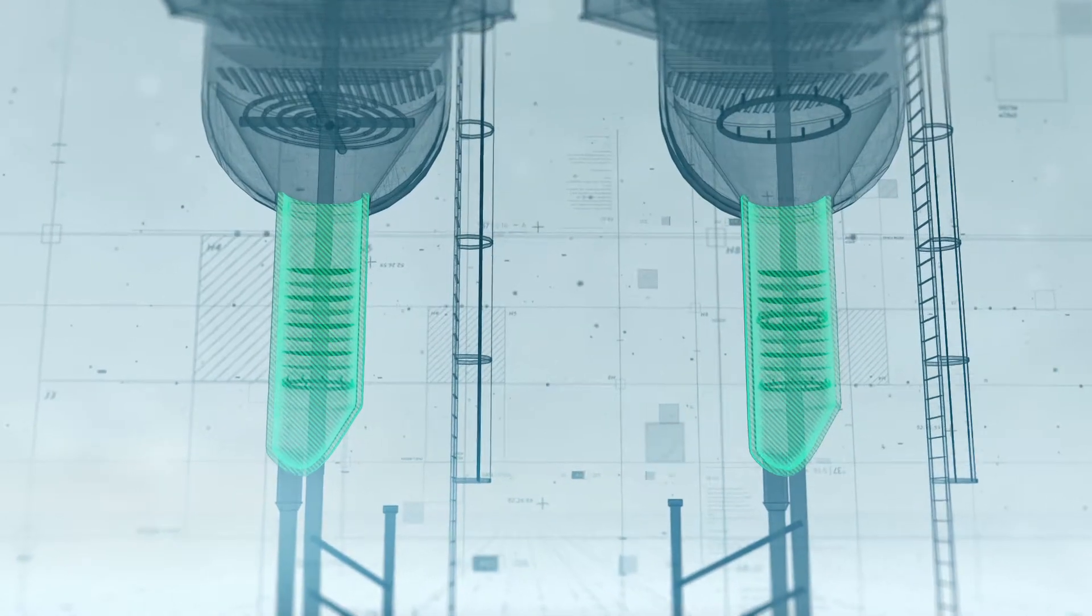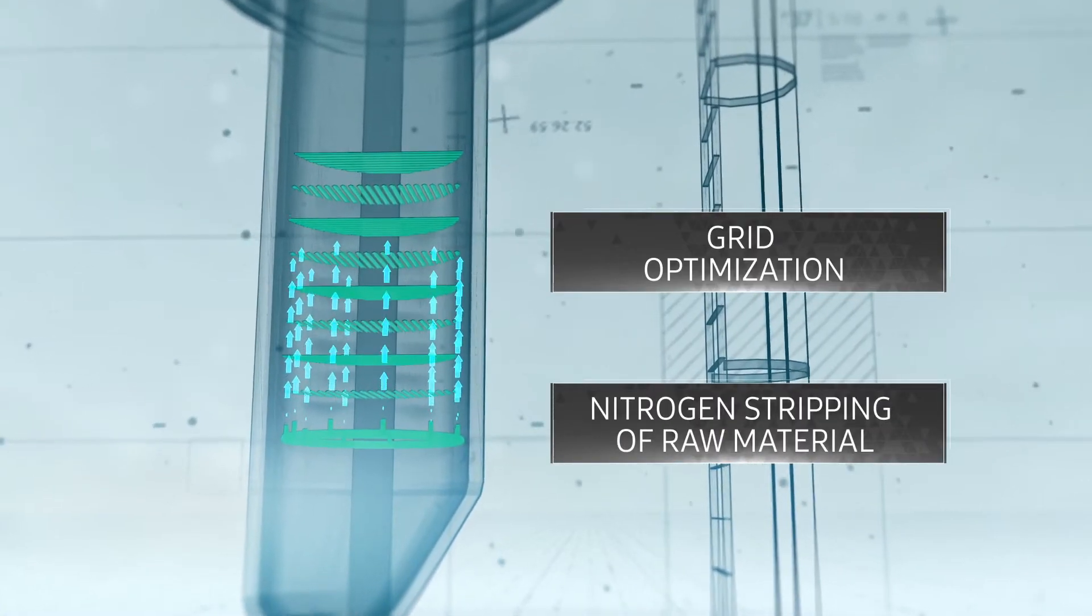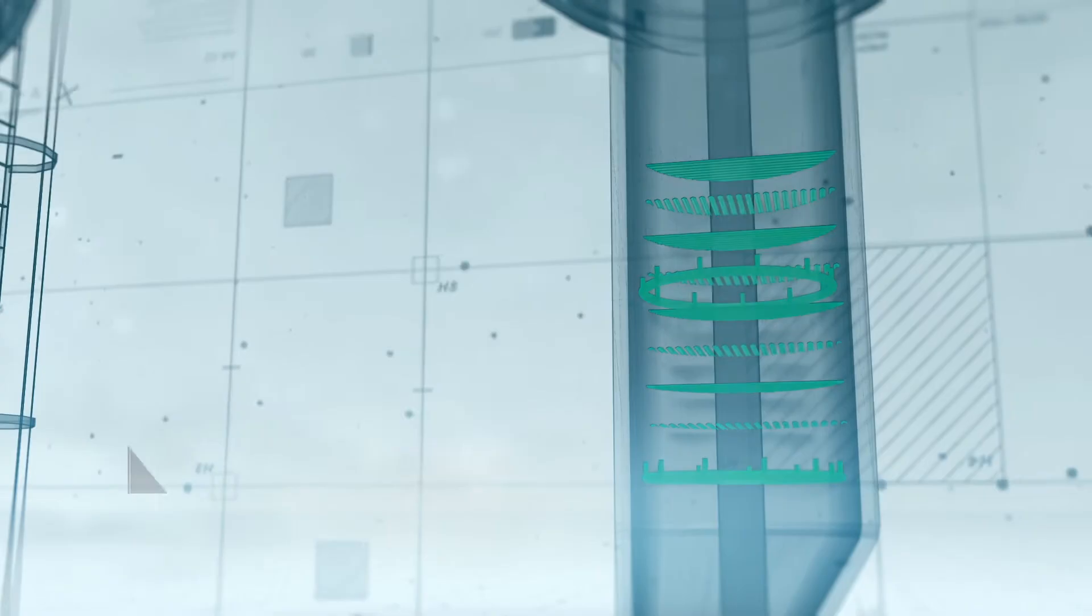Design of the stripping zone operation includes the optimization of the distribution grids, their quantity, and the supply of nitrogen for blowing of raw materials.